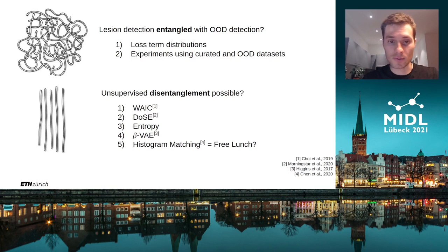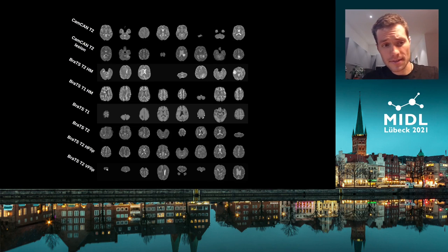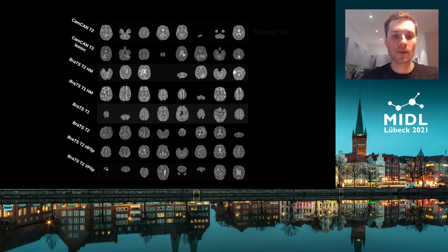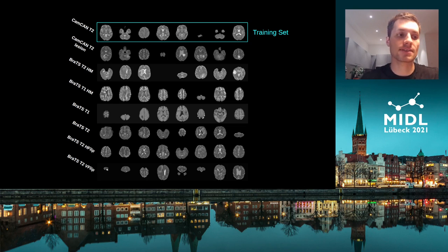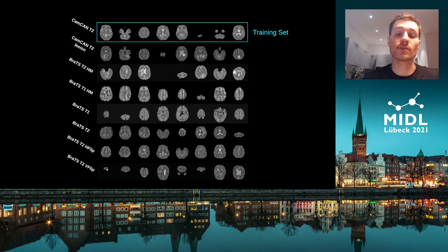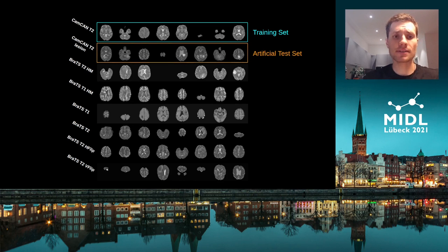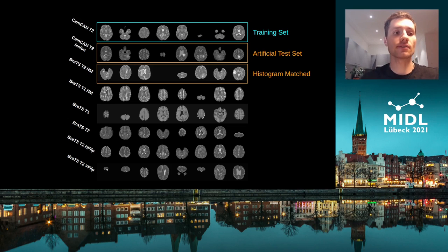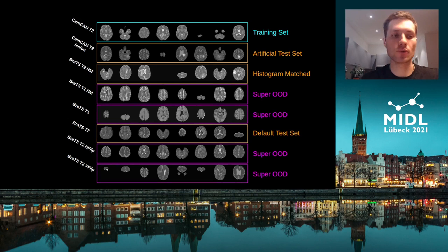We also answer the question whether histogram matching is a free pass to remedy the domain shift effect. The main datasets used throughout this work: models were trained using T2-weighted images from the CAMCAN dataset, holding around 70,000 slices from several hundred patients. Since we had no access to a comparable dataset including lesional samples, we crafted an artificial lesional test set by adding Gosh-Blobs with similar intensities compared to actual lesions found in other datasets. We also tested histogram-matched and non-matched samples from the BRATS dataset, achieving a cascade of datasets that are progressively more out of distribution.